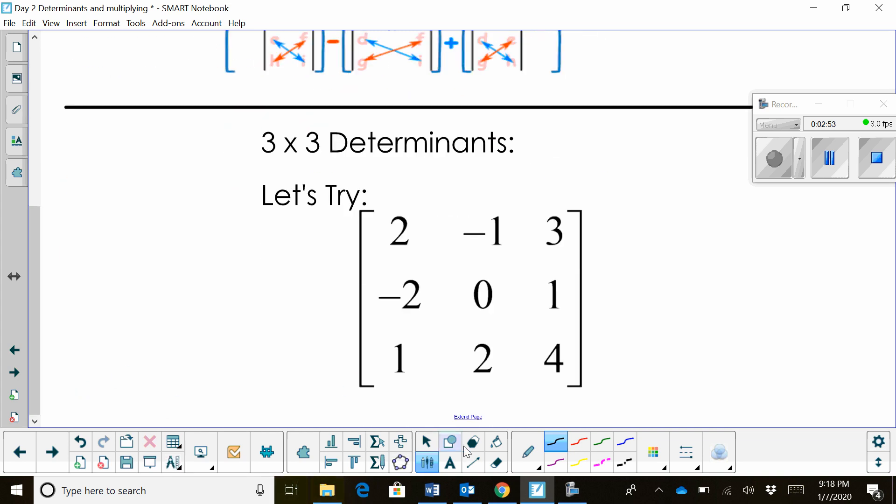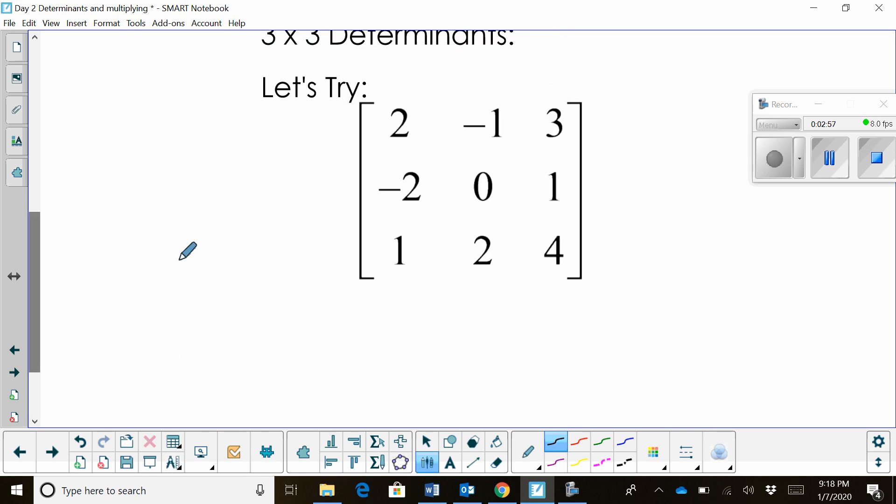So let's try one. A, B, and C in this one are that top row. So A is 2, B is negative 1, and C is 3.